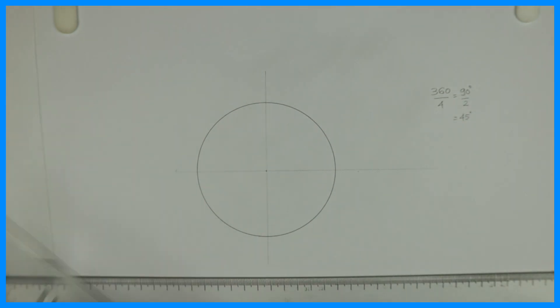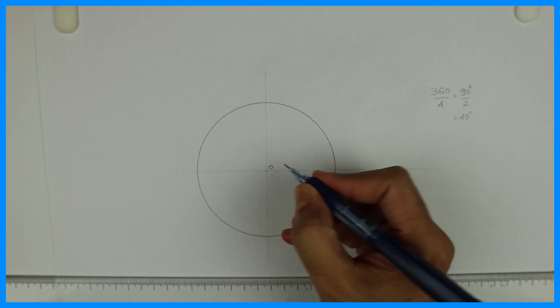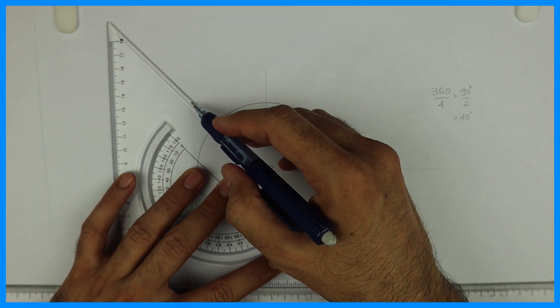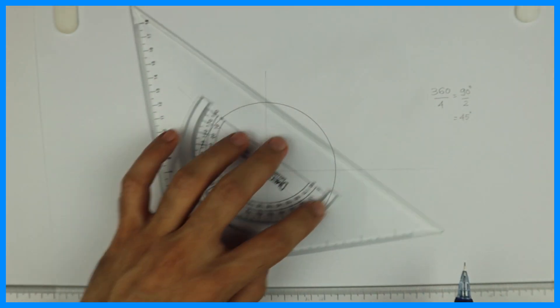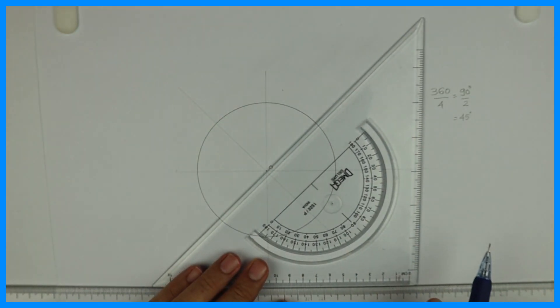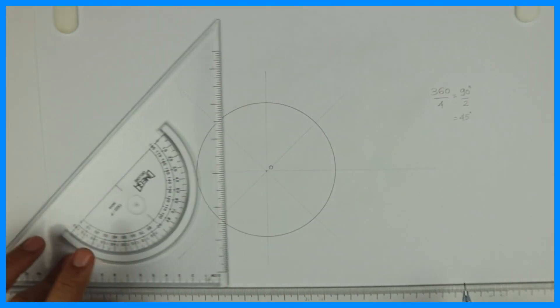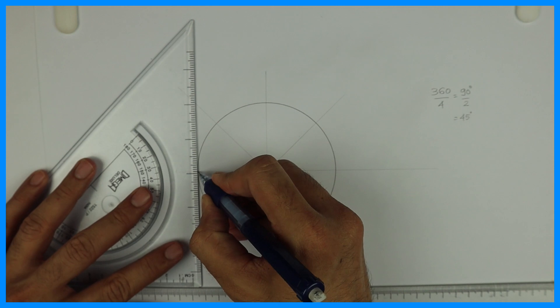I will take 45 degrees from O. From this O I will draw 45 degrees and I will draw line. Same way on the downside also we'll draw 45 degrees and then we will draw tangent from here.